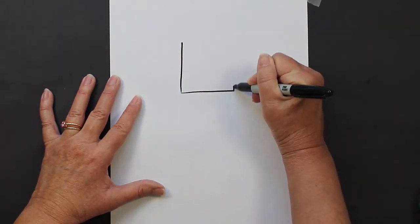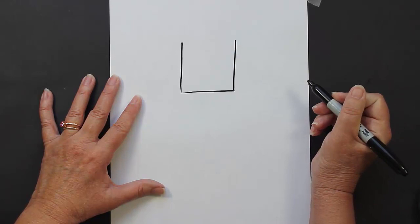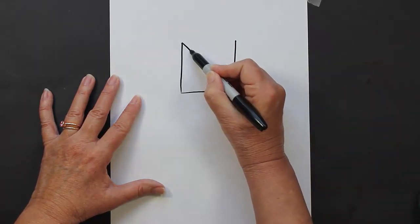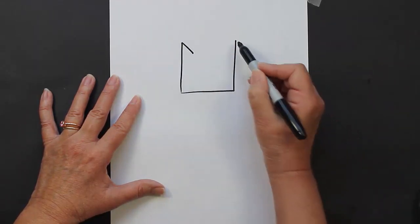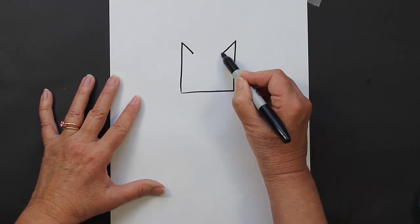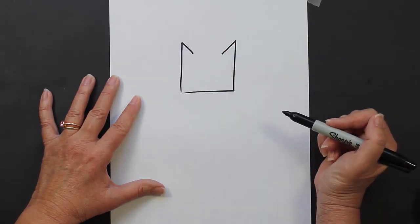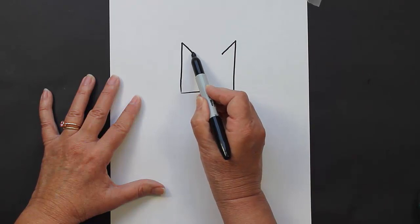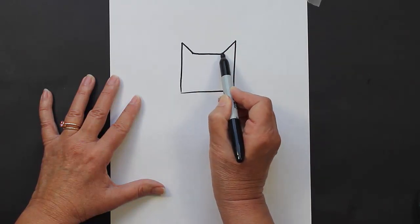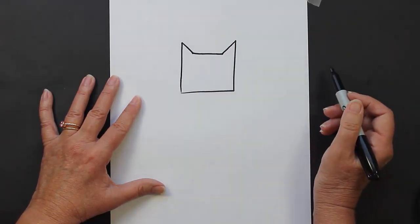We're going to make a straight line up and a straight line up, and then a slanted line down and a slanted line down coming from the top of each of the lines. Now we're going to connect those two slanted lines with a straight line - that is going to be the head of our cat.